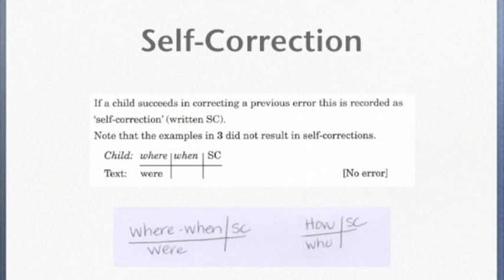The two examples shown show that the first one says, the child says, where, when, were, that would be recorded as a self-correction. And the second one, the child says, how, who, and self-corrects.